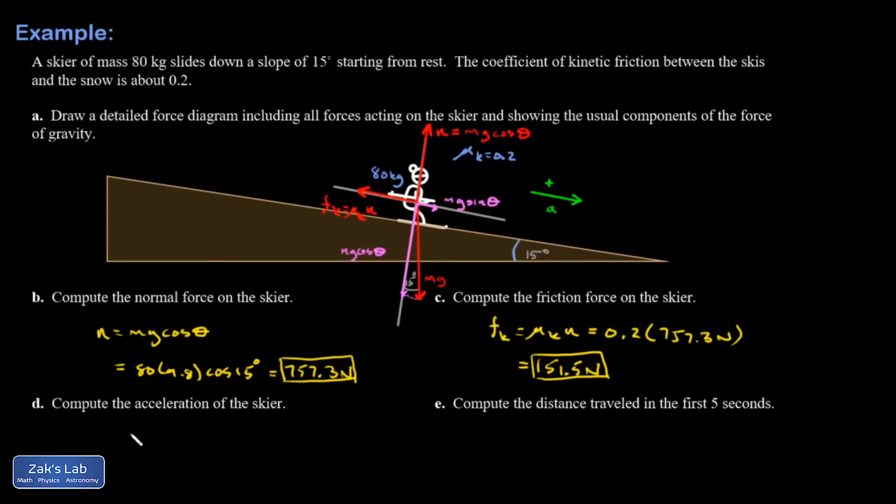Compute the acceleration of the skier. We're going to do a force analysis in this parallel direction. So I have, in the positive direction, mg sine theta. In the negative direction, the kinetic friction force. That's the net force equals ma. Since I've already directly computed the friction force, I'm going to go ahead and throw this number in. If you don't do that, one advantage is that the mass will cancel out. So it's probably kind of break even, whichever way you choose to go at this point. So I'm going to throw in my 80 times 9.8 times the sine of 15 degrees minus 151.5 equals 80 times a.